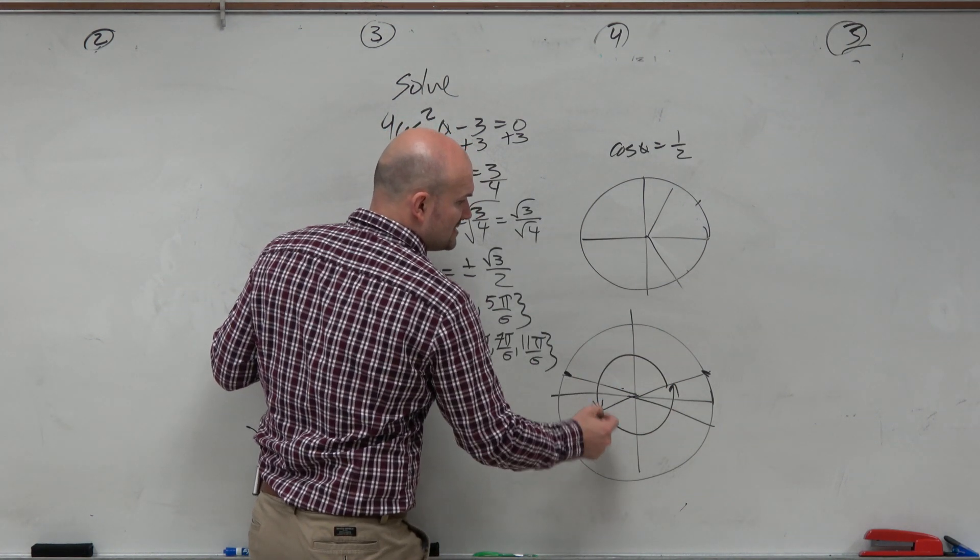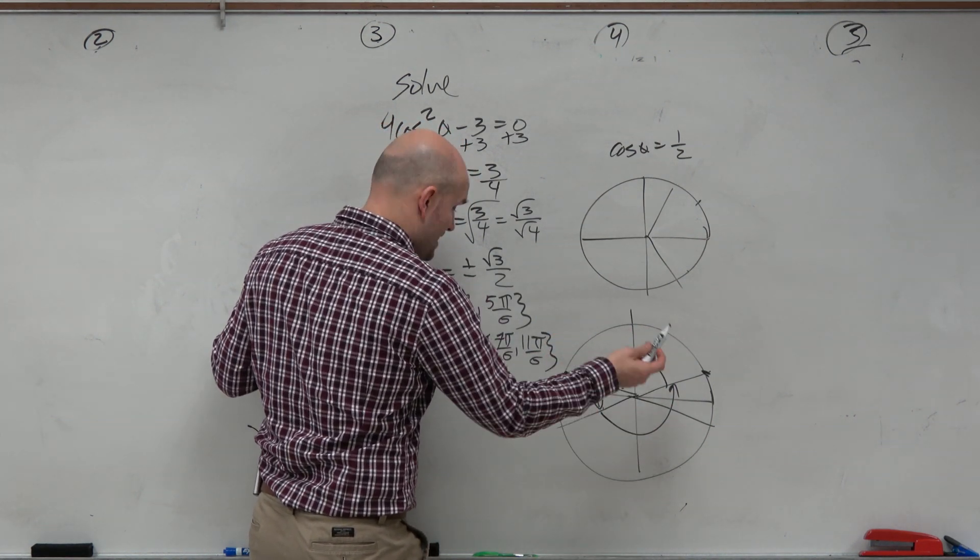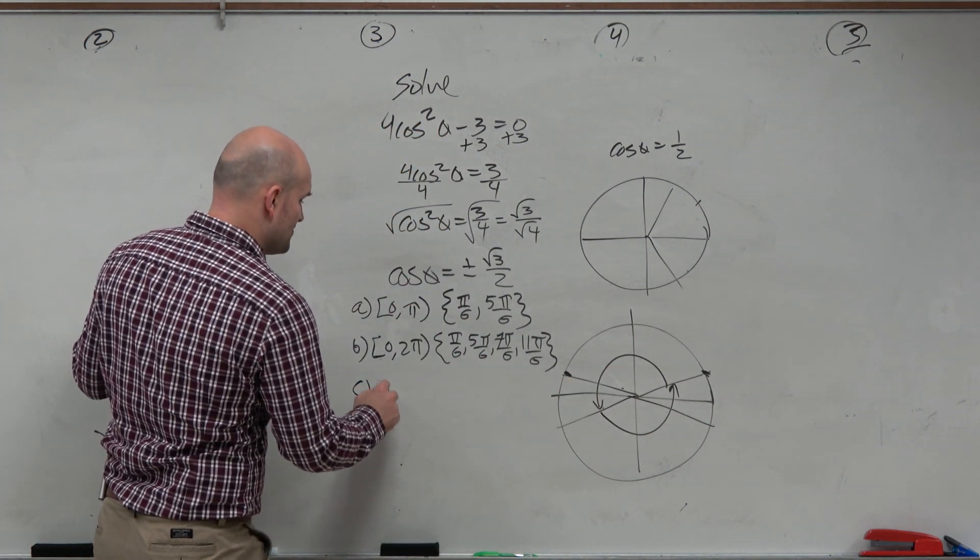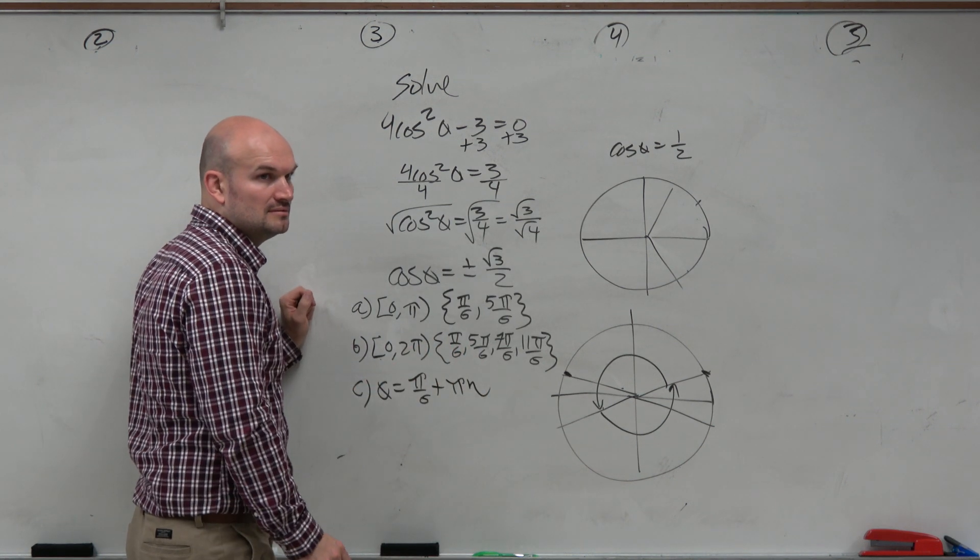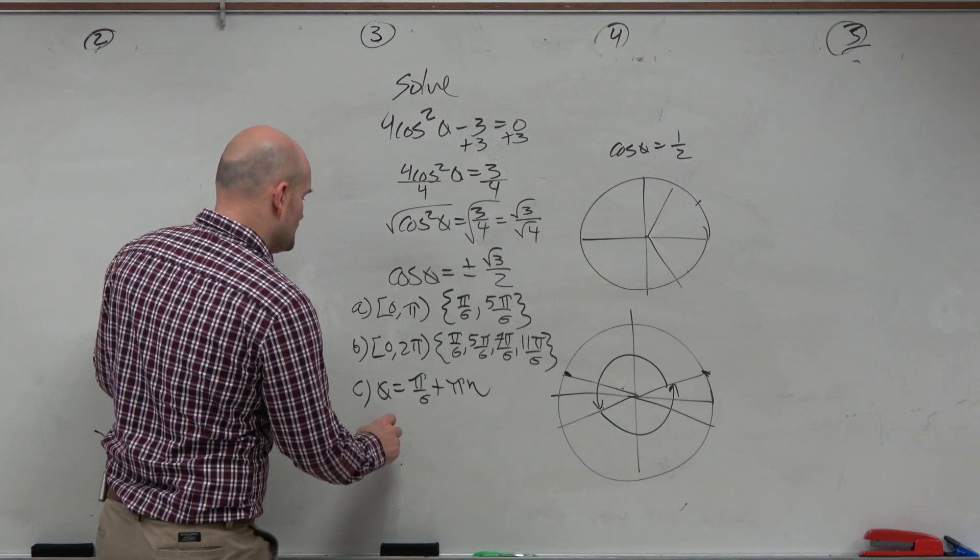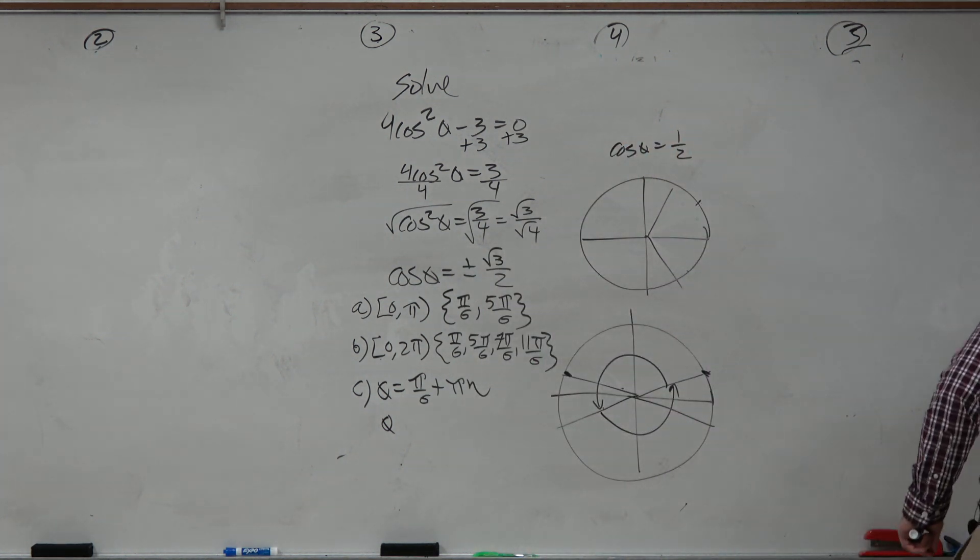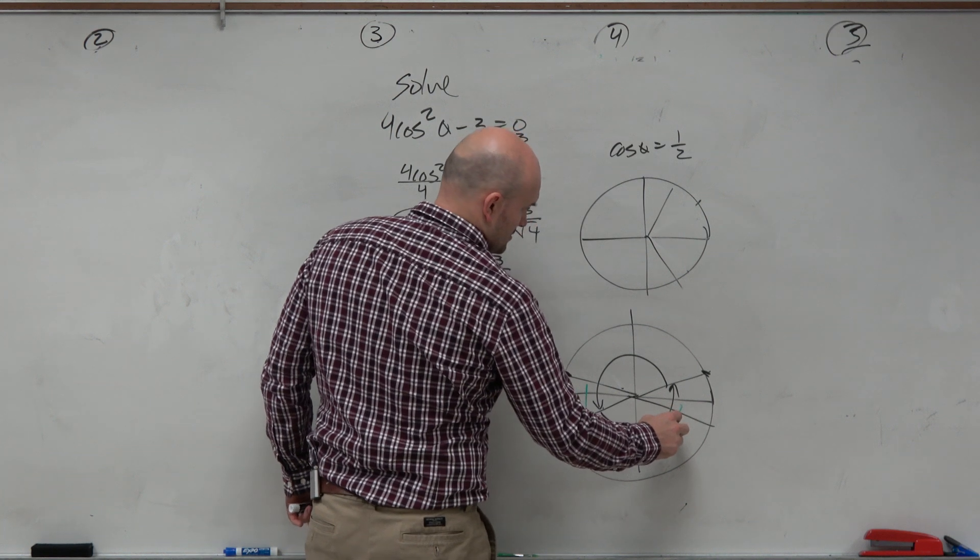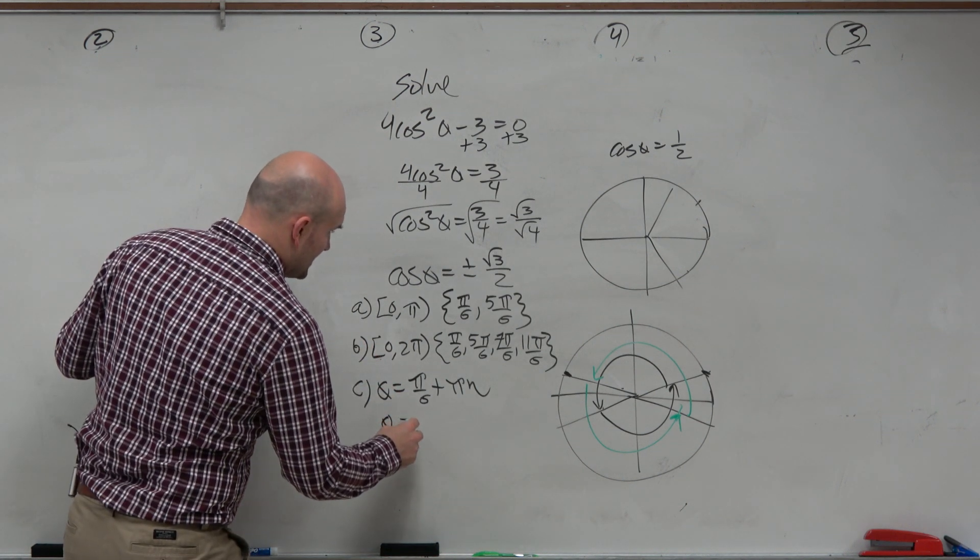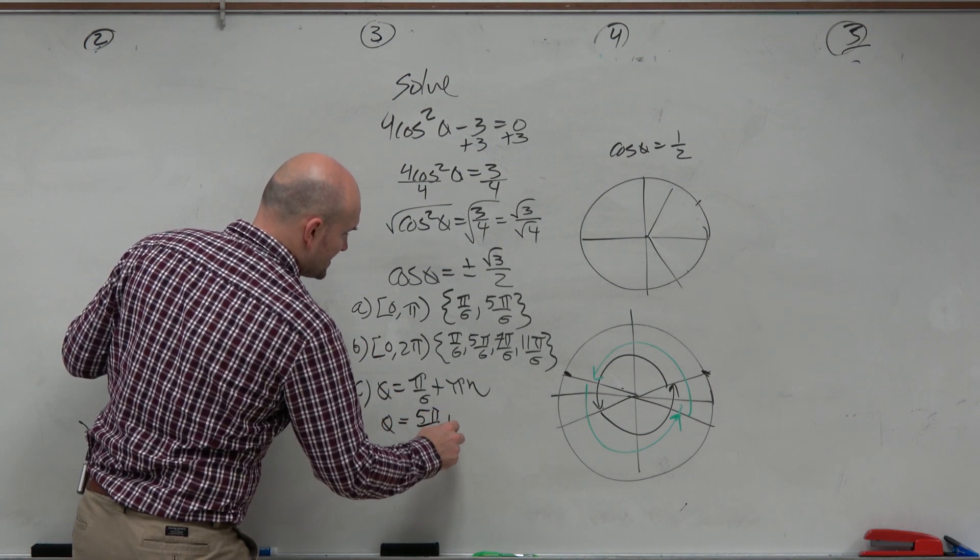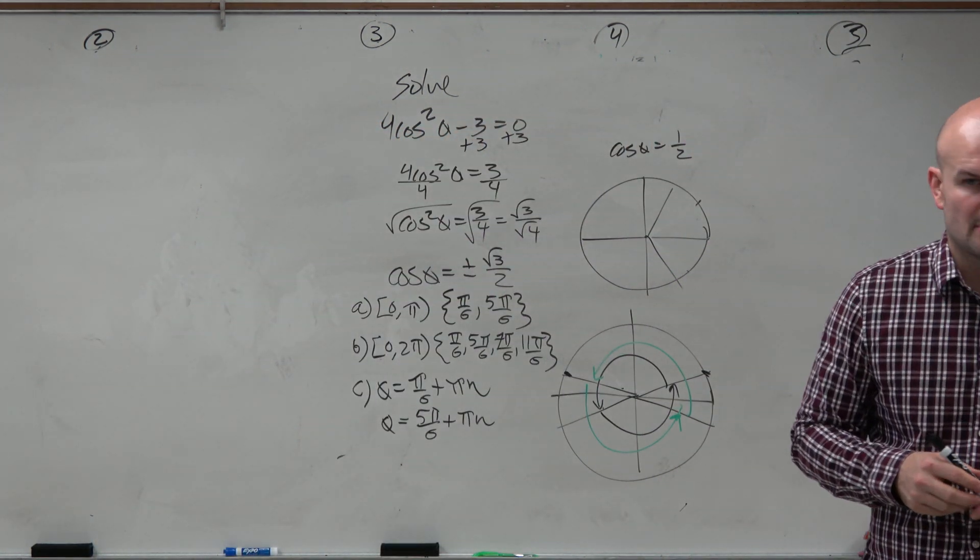So now we just need to figure out, well, what is this angle measure? Looks like it's halfway around the circle. So we would call this pi. So for all solutions, we could say theta equals pi over 6 plus pi n. For the next one, you can see that these two angles are equidistant from each other. So therefore, I can say theta equals 5 pi over 6 plus pi n. That is what you guys would see on a multiple choice, as well as what I would expect for a simplified response.